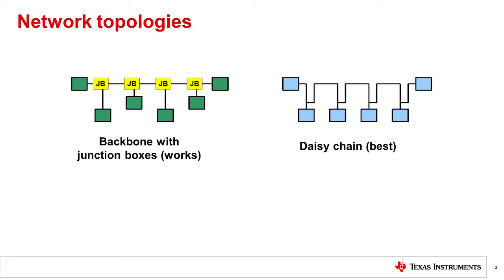The RS-485 standard suggests that nodes be networked in a daisy chain. In this topology, the participating drivers, receivers, and transceivers connect to a main cable trunk via short network stubs. The interface bus can be designed for full duplex or half duplex transmission. An alternative to the daisy chain topology is the junction box approach, which should be implemented in a way to minimize stub lengths and thus reduce reflections.